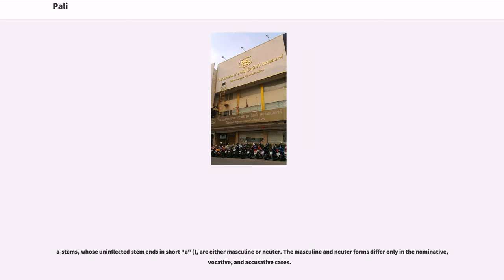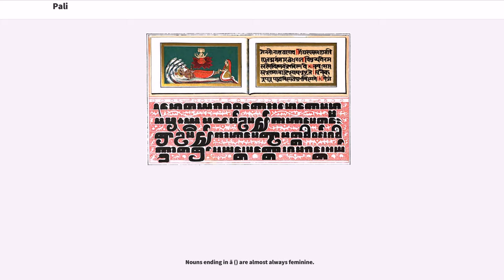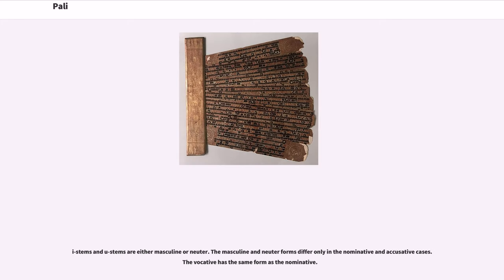A-stems, whose uninflected stem ends in short A, are either masculine or neuter; the masculine and neuter forms differ only in the nominative, vocative, and accusative cases. Nouns ending in long A are almost always feminine. I-stems and U-stems are either masculine or neuter, with masculine and neuter forms differing only in the nominative and accusative cases. The dative vocative has the same form as the nominative.